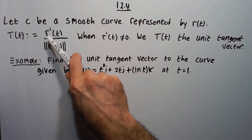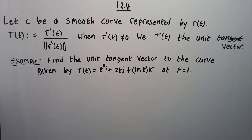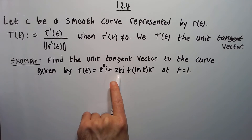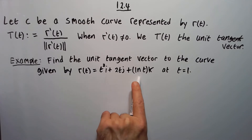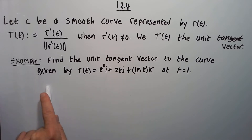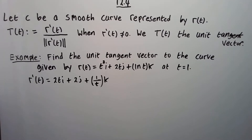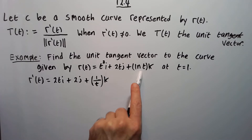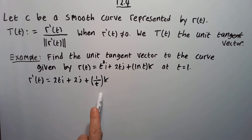We have to find the derivative first. The derivative of T squared is 2T, derivative of 2T is just 2, and derivative of ln of T is 1 over T. So R prime equals 2T i plus 2 j plus 1 over T k.